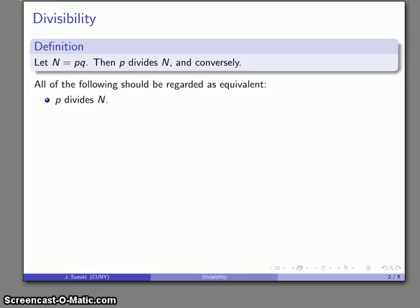We might say that p divides N, or we might say that N is divisible by p, or we can introduce notation: p vertical bar N, which we read as 'p divides N'. Because mathematicians don't like writing a lot out, this notation is probably the most common way of expressing divisibility.